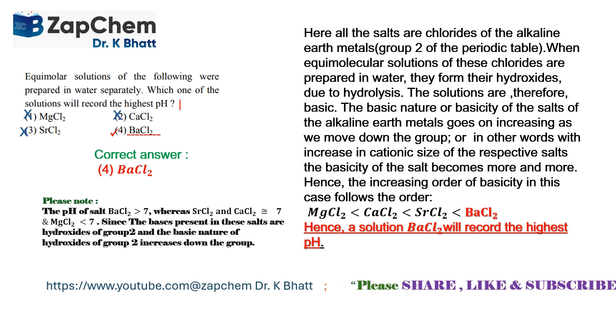Please note, practically we have found that the pH of barium chloride solution is greater than 7, whereas strontium chloride and calcium chloride are almost similar, equal to 7. Whereas magnesium chloride's pH is less than 7.